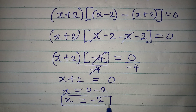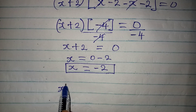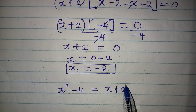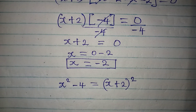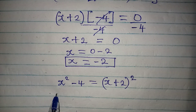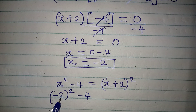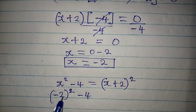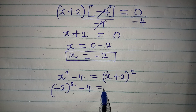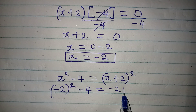So x equals minus 2 is the value of x for the equation. Now let's go back to the original equation and substitute. We had x squared minus 4 equals x plus 2 squared. Putting in x equals minus 2, we have minus 2 in brackets squared, then minus 4. Be sure to put in the brackets or you've failed the working. This equals x plus 2, so minus 2 plus 2, and we still square it.